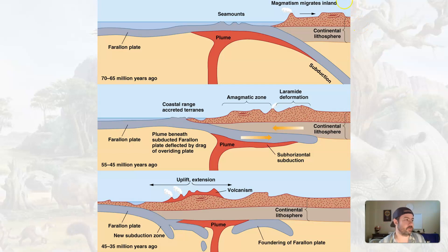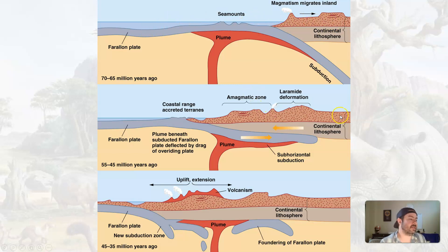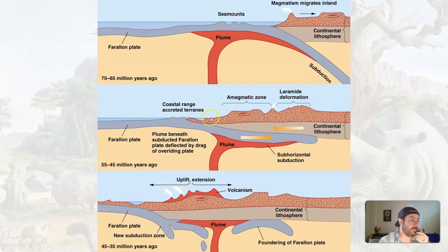This is due — and we did touch on this in Unit 11 — to the change of angle of the subducting Farallon plate. At a normal steep angle, the oceanic crust was being subducted and creating these coastal ranges. But then, as North America continued westward and the Farallon plate headed east, the continental crust of the North American plate overrode the Farallon plate, causing it to change from a steep angle to a more shallow angle. That put more pressure on the interior, past the Nevadan and Sevier orogenies, producing the Laramide faulting and deformation further inland.